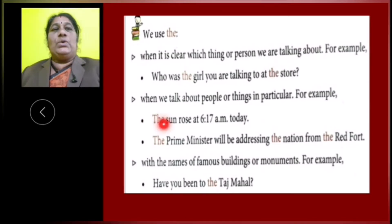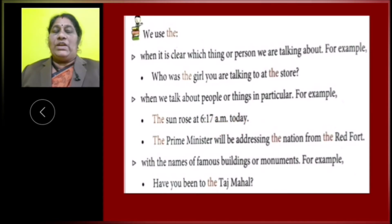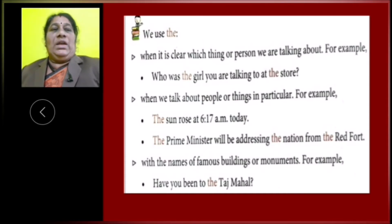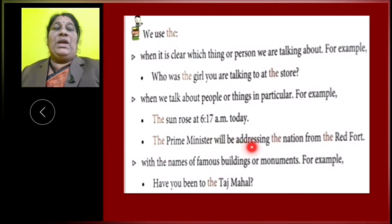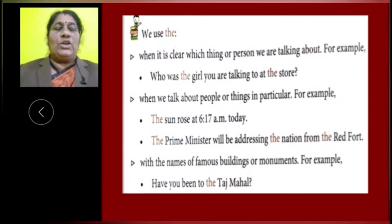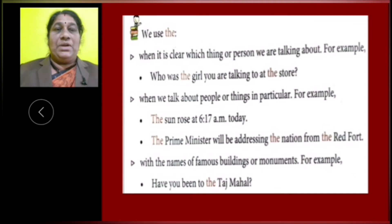For example, 'The sun rose at 6:17 a.m. today.' Here, we are talking about a particular thing — that is the sun. Next, 'The prime minister will be addressing the nation from the Red Fort.' Here, we are talking about a particular person, particular country and particular building.